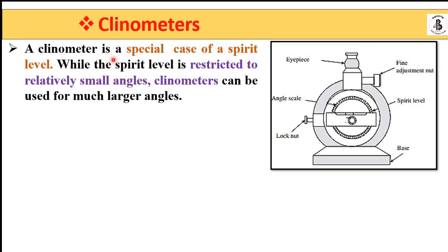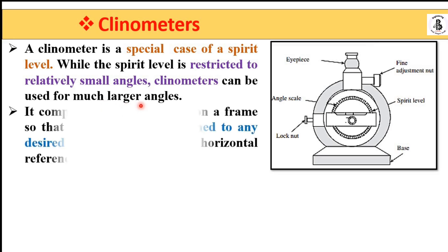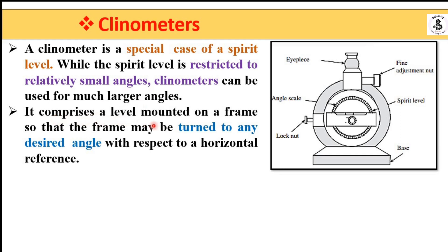While the spirit level is restricted to relatively small angles, clinometers can be used for much larger angles — that is one of the advantages of the clinometer. It comprises a level mounted on a frame so that the frame may be turned to any desired angle with respect to the horizontal surface. After unlocking the key, it is free to rotate and can be easily set anywhere onto the workpiece materials.